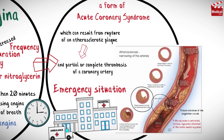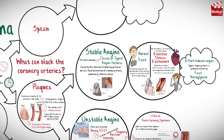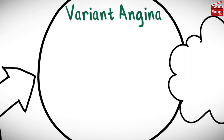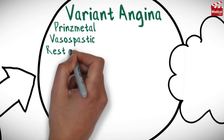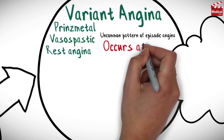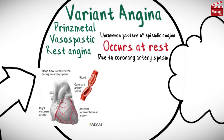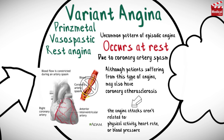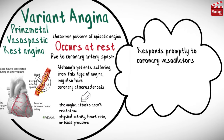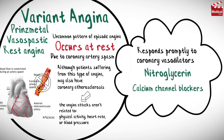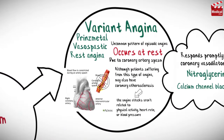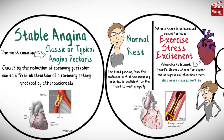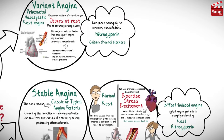The third type is variant angina, also known as Prinzmetal, vasospastic, or rest angina. It is an uncommon pattern of episodic angina occurring at rest due to coronary artery spasm, causing decreased blood flow to the myocardium. Although patients may also have coronary atherosclerosis, the attacks are not related to physical activity, heart rate, or blood pressure. Variant angina generally responds promptly to coronary vasodilators such as nitroglycerin and calcium channel blockers.